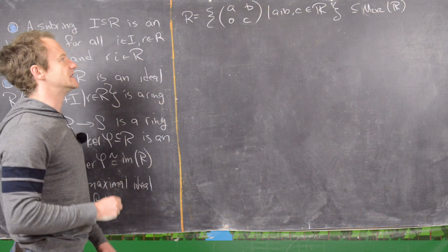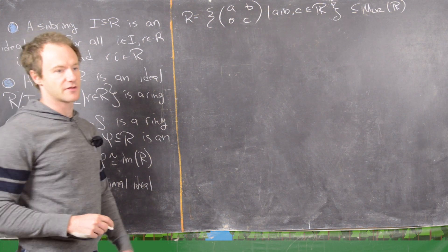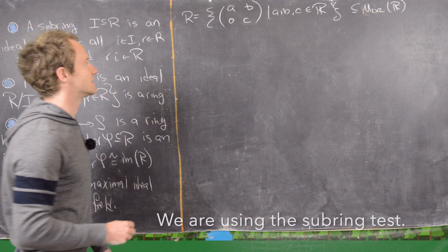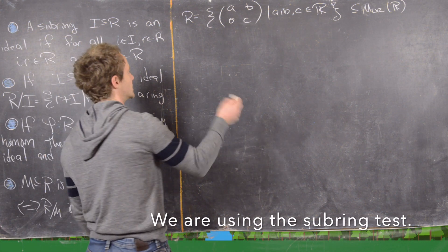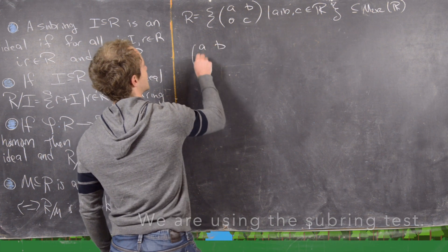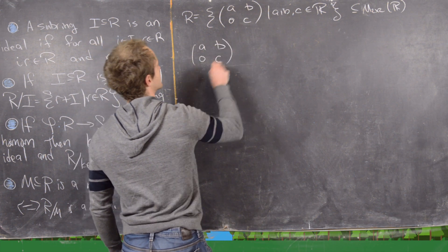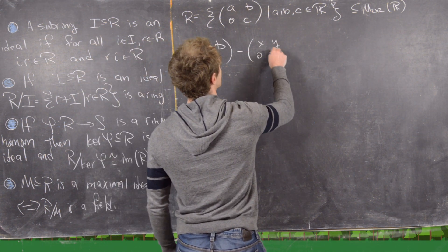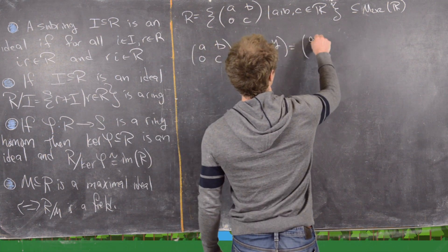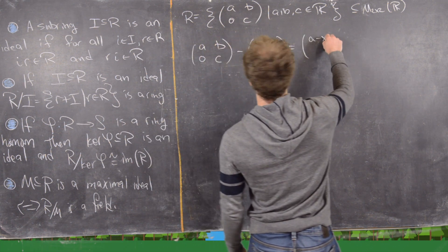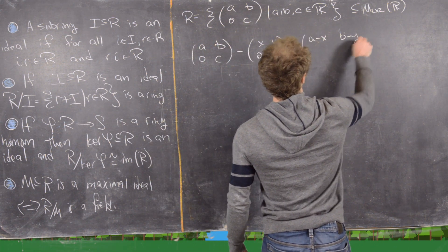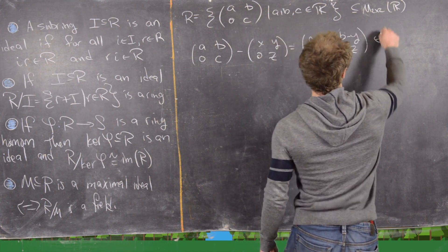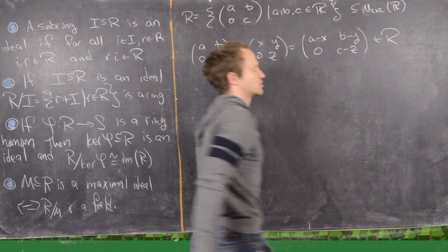We know this is a subset of M_{2x2}(ℝ), the ring of 2x2 matrices, so all we really need to show is that it is a subring — closed under subtraction and multiplication. Notice that [a,b;0,c] minus [x,y;0,z] equals [a−x, b−y; 0, c−z], which is clearly still upper triangular.